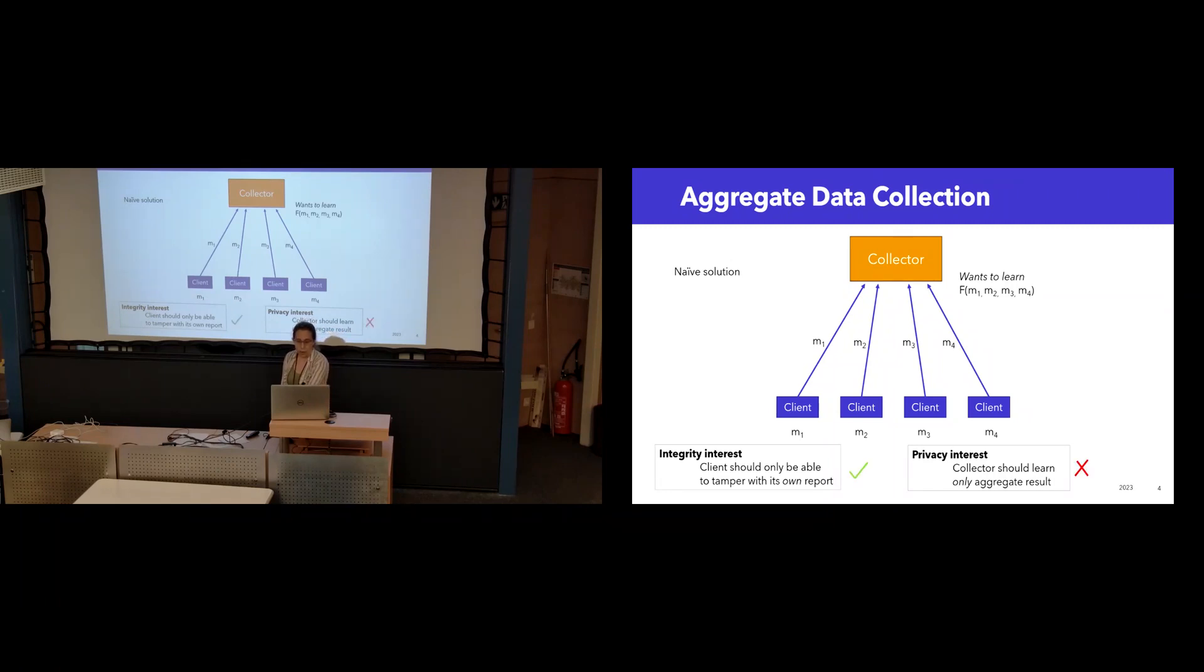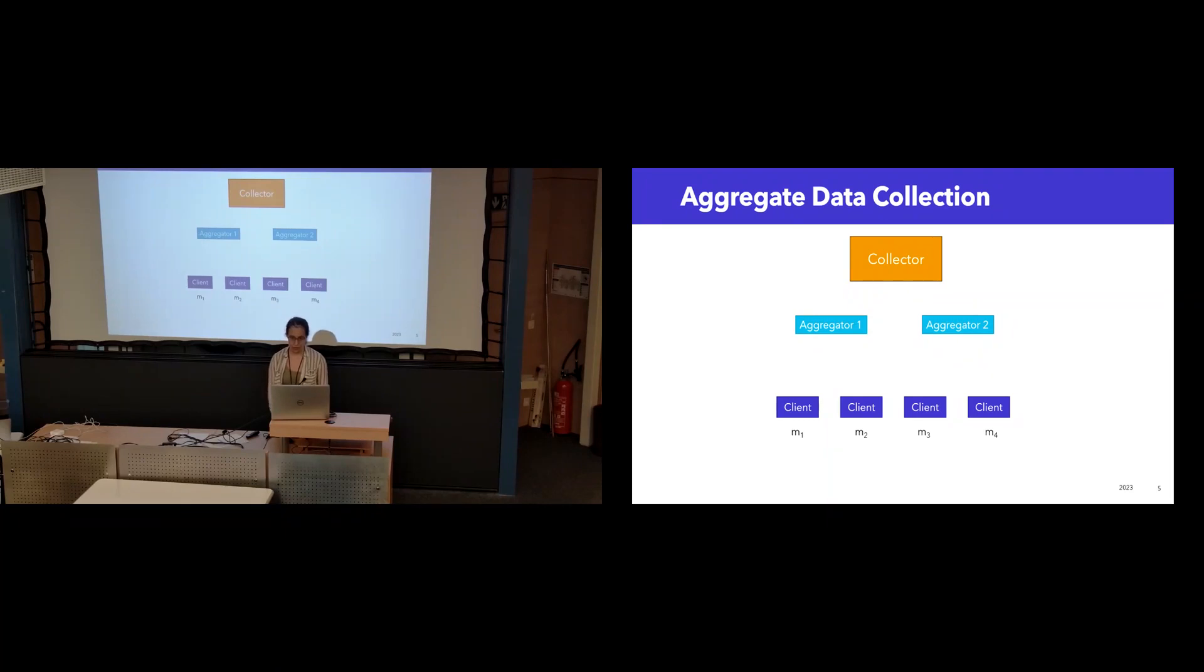So we introduce the verifiable distributed aggregation function framework, and this is an MPC setting where we have third-party aggregators who are expected not to collude, who are responsible for handling both the privacy of clients and the integrity of the eventual aggregate result.